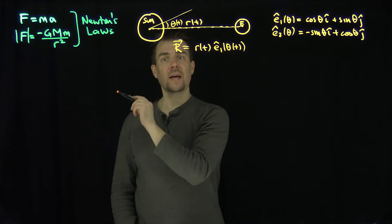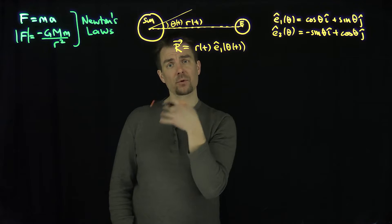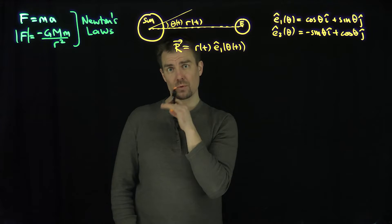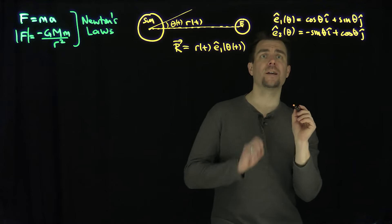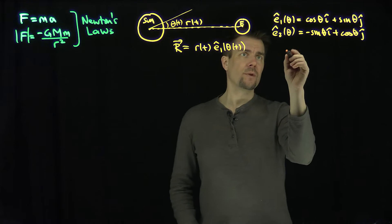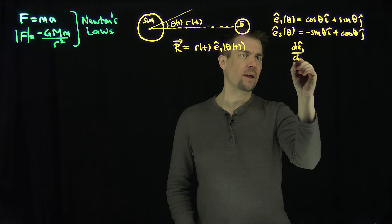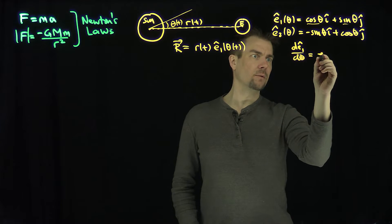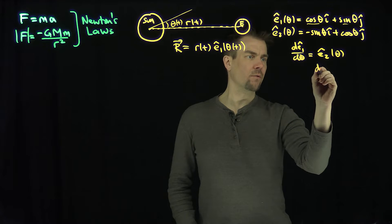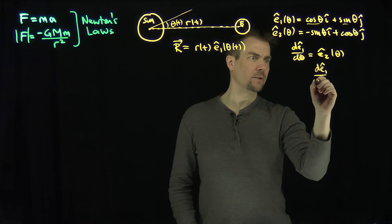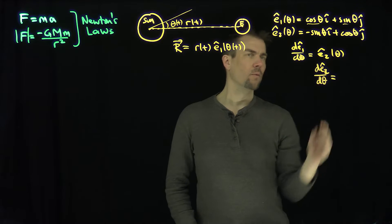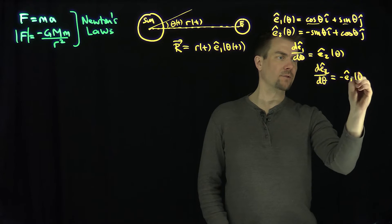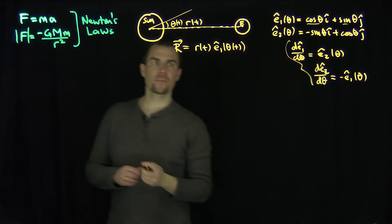The derivative of R with respect to t is the velocity, and the second derivative is the acceleration, so I want to take two derivatives of R with respect to t. Using the chain rule: the derivative of e1-hat with respect to theta gives e2-hat of theta, and the derivative of e2-hat with respect to theta gives negative e1-hat of theta. Those are the theta-derivatives of e1 and e2-hat.